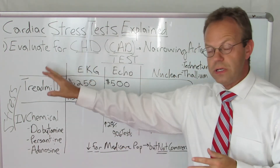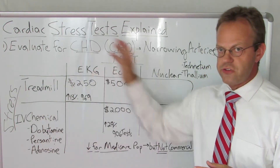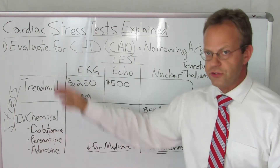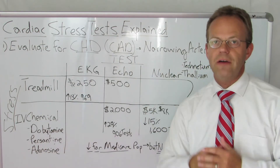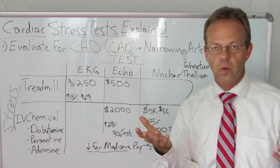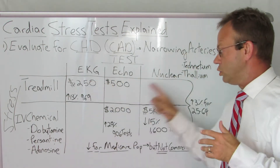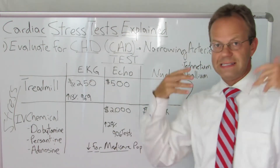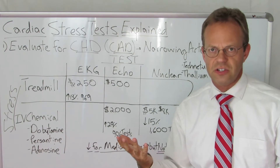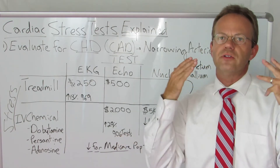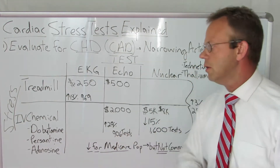When you do the permutations and combinations of the stresses with the tests, you have a potential total of six combinations. They don't do all six combinations, but here are the most frequent ones they do.